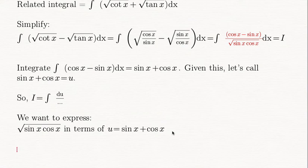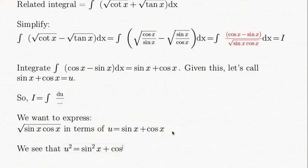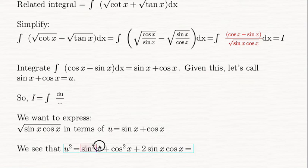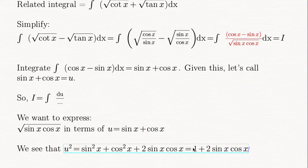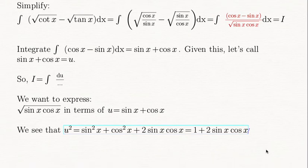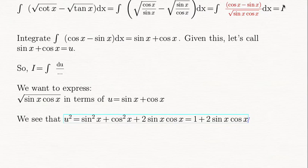Taking a cue from the earlier video, we see that u² = sin²x + cos²x + 2 sin x cos x. Since sin²x + cos²x = 1, this simplifies to u² = 1 + 2 sin x cos x. We are now close to expressing √(sin x cos x) in terms of u, and we want to keep this integral I in view.